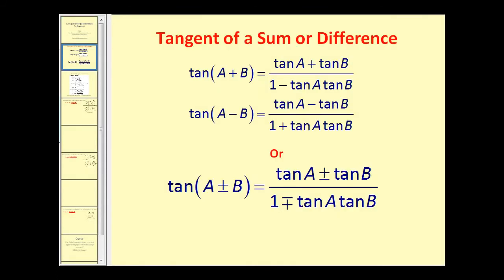To find the tangent of a sum or difference, we use one of these identities. The tangent of the sum of two angles equals tangent A plus tangent B divided by one minus tangent A times tangent B. For the difference of angle A and angle B, the numerator is a difference and the denominator is a sum. We can combine these into one identity using a plus-or-minus sign for the two angles, a plus-or-minus in the numerator, and a minus-plus in the denominator.